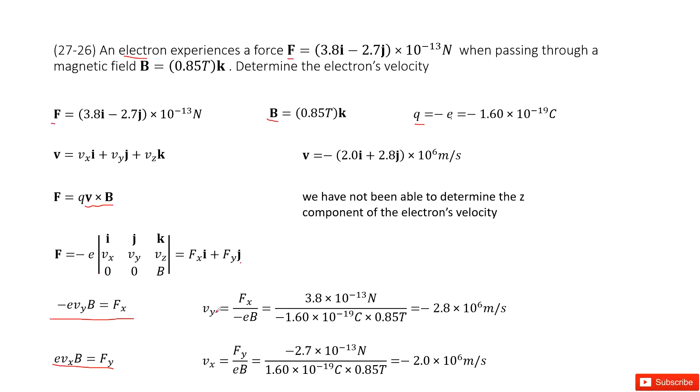And then solve it. You get vy equal to fx divided by negative eb. Input the given quantities. fx is this one, this is fy, this is b. Input the given quantities. You get the answer there.